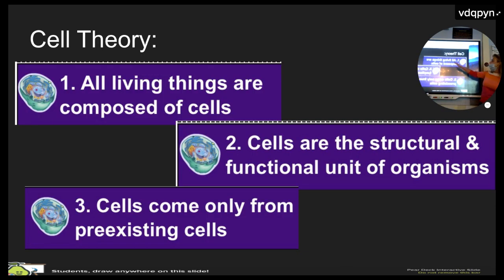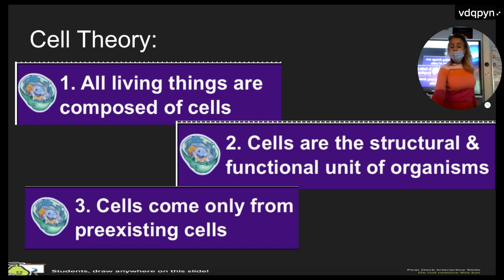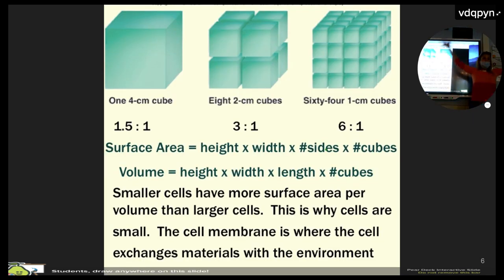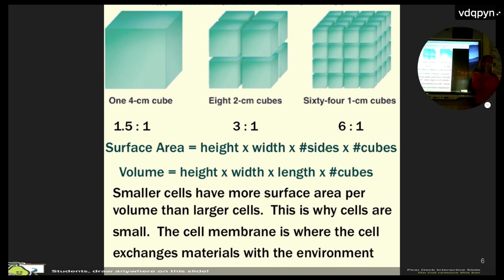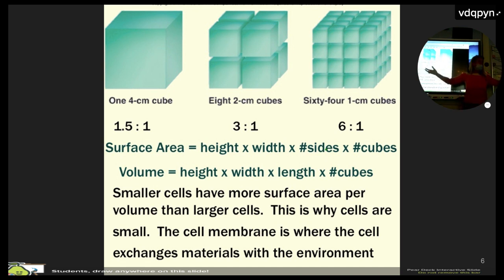The first part is cell theory: all living things are made of cells, they're the structural and functional unit of life, and cells only come from pre-existing cells. Cells are very very small because we want a large surface area per volume. We talked about how to calculate surface area to volume — it's on your equation sheet for the College Board. Take the surface area, divide it by the volume, and you have that number.